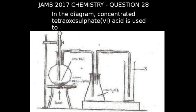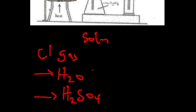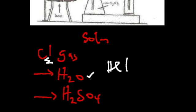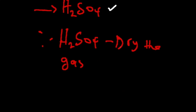Question number 28 of the JAM 2017 chemistry exams: concentrated tetraoxosulphate VI acid is used to — this diagram illustrates the production of chlorine gas. When chlorine gas is obtained, it is passed through H2O to remove hydrochloric acid, and thereafter passed through concentrated H2SO4 to remove traces of water. Therefore, H2SO4 is used to dry the gas.